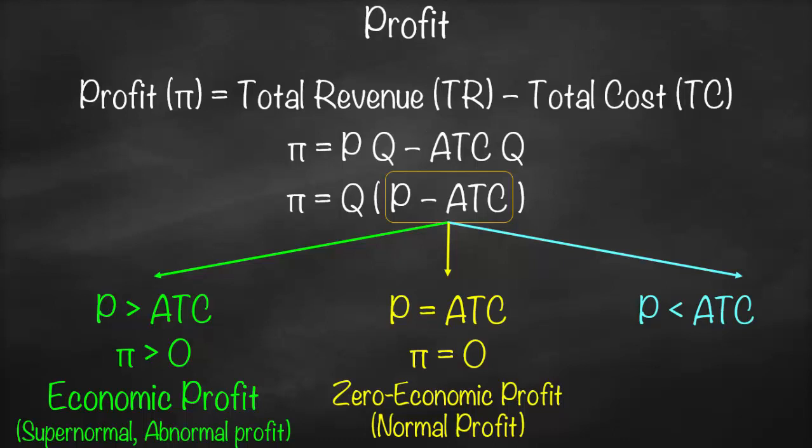Why do we call it zero economic profit? When we calculate economic profit, it is total revenue minus total cost. This total cost is called opportunity cost or economic cost, which means it includes both explicit and implicit cost. Therefore, when our economic profit is equal to zero, we call it zero economic profit, meaning we have a normal profit — no abnormal or super normal profit.